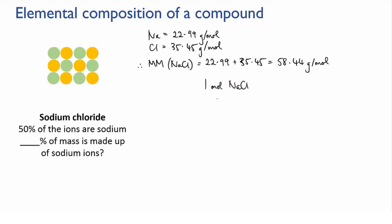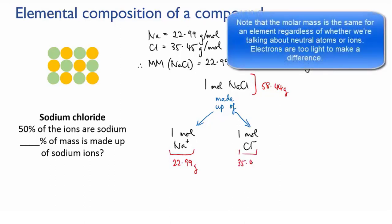So the mass of one mole of sodium chloride is 58.44 grams. Now it's also pretty easy to figure out how much of that is due to sodium and how much to chloride. Now we know that in one mole of sodium chloride there's one mole of sodium ions and one mole of chloride ions. So of that 58.44 grams, 22.99 grams is sodium from the one mole of sodium ions and 35.45 grams is chloride, one mole of chloride ions.